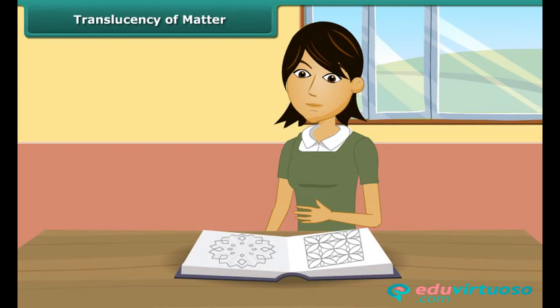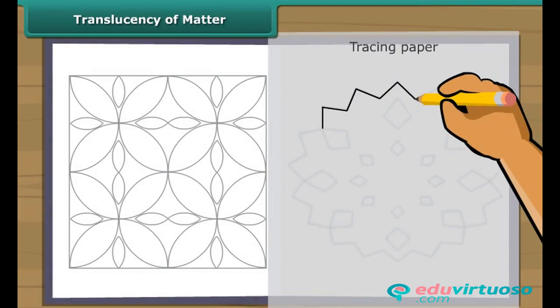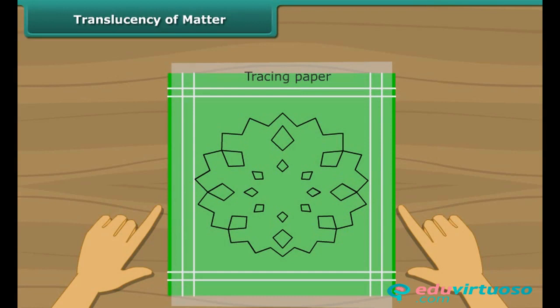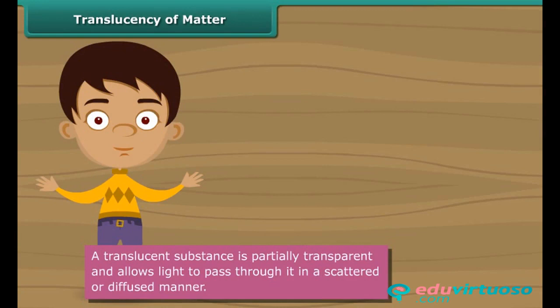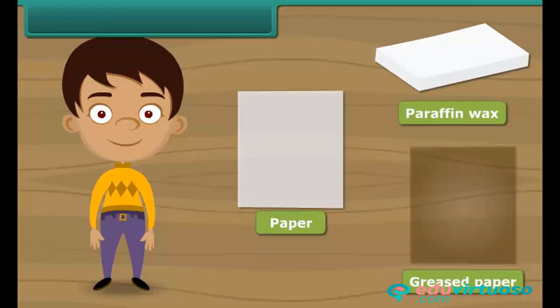Rekha is getting ready to embroider a handkerchief. She has located a pattern in a book and wants the same on her handkerchief. She uses a tracing paper to copy the pattern from the book onto her hanky. What made this possible was the translucent tracing paper. A translucent substance has characteristics of both transparent and opaque substances — it absorbs some light and reflects back the rest. The absorbed light is transmitted in a scattered or diffused manner. Other examples of translucent substances are paper, paraffin wax, and greased paper.